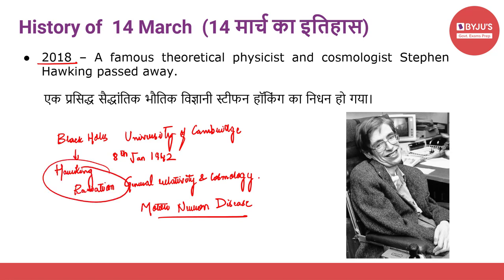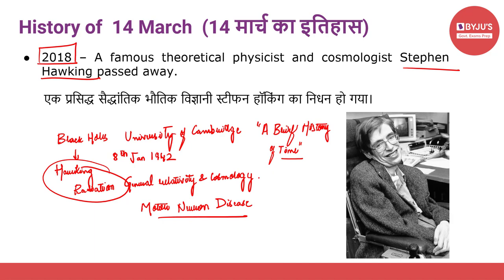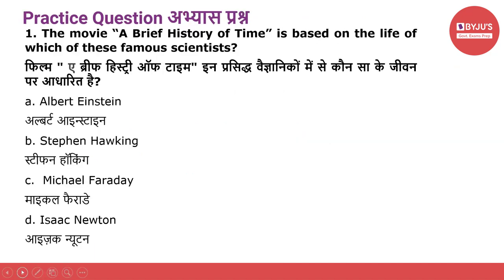Hawking radiation is a blackbody radiation predicted to be released by black holes due to quantum effects near the black hole event horizon. Stephen Hawking was a recipient of the Presidential Medal of Freedom — the United States' highest civilian award. His book A Brief History of Time is an explanation of cosmology, and a film of the same name was made in 1991 as a biography of Stephen Hawking. He passed away on 14th March 2018.